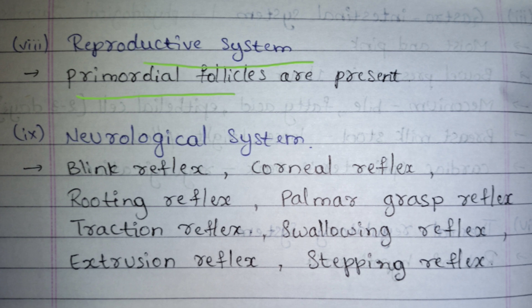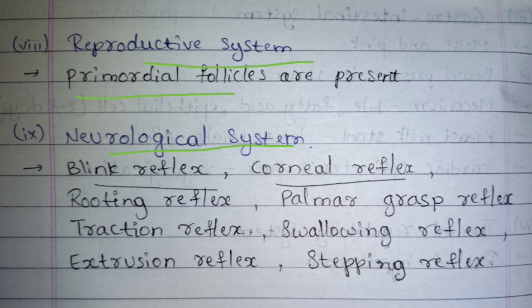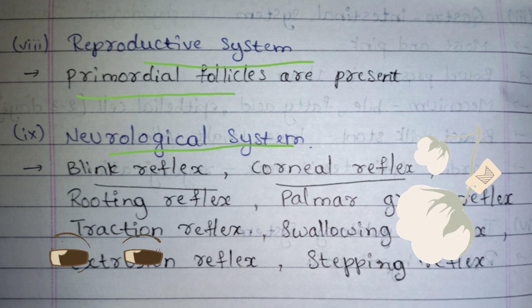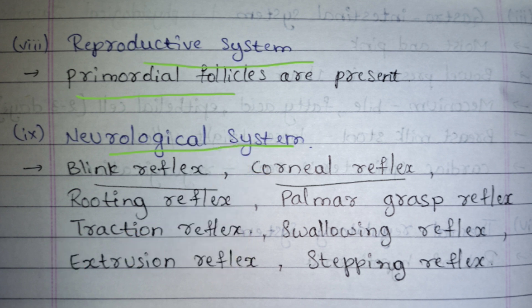The neurological system is very important. First is the blink reflex: if you place a light in front of the baby's eyes, the baby blinks or tries to close its eyes. Next is the corneal reflex: a cotton ball placed near the eyes causes the baby to close its eyes as the cotton approaches. Next is the rooting reflex: if you place your finger at the tip of the baby's lips, the baby will turn toward that direction.